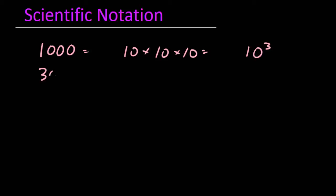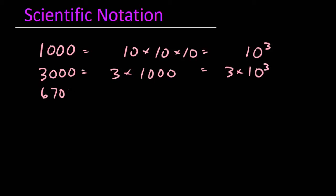Since the number 3,000 is 3 times bigger than 1,000, we can write it as 3 times 1,000, or 3 times 10 to the third. And since 6,700 is 6.7 times as big as 1,000, we can write it as 6.7 times 1,000, or 6.7 times 10 to the third.